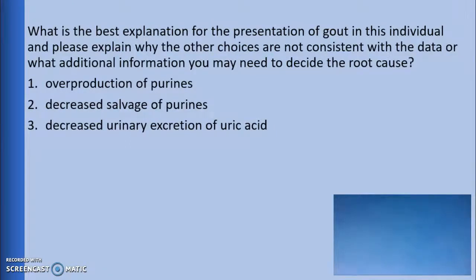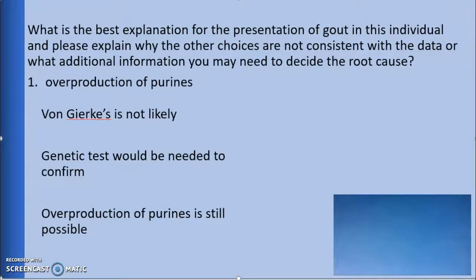The first option is overproduction of purines. Overproduction of purines would lead to gout and increased uric acid levels. One notable disorder that causes overproduction of purines is von Gierke disease. However, von Gierke disease includes many prominent symptoms not mentioned here, including low blood sugar and stunted growth. Blood sugar, genetic, and lactic acid blood tests would be needed to identify von Gierke disease. Overproduction of purines cannot be eliminated as a choice just yet, because von Gierke disease is not the only cause of overproduction of purines.